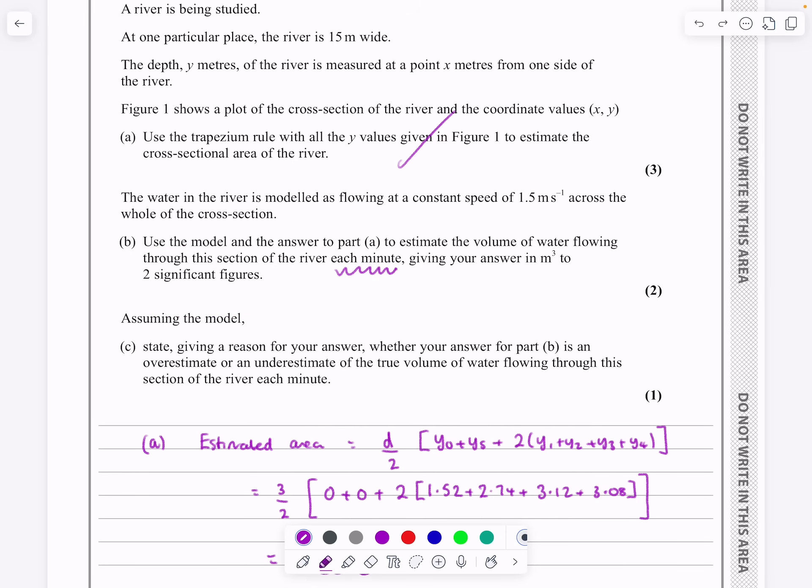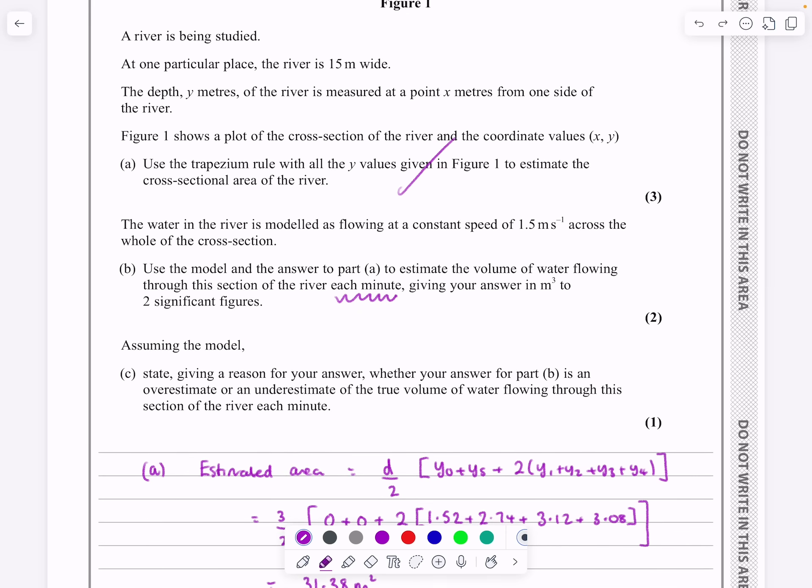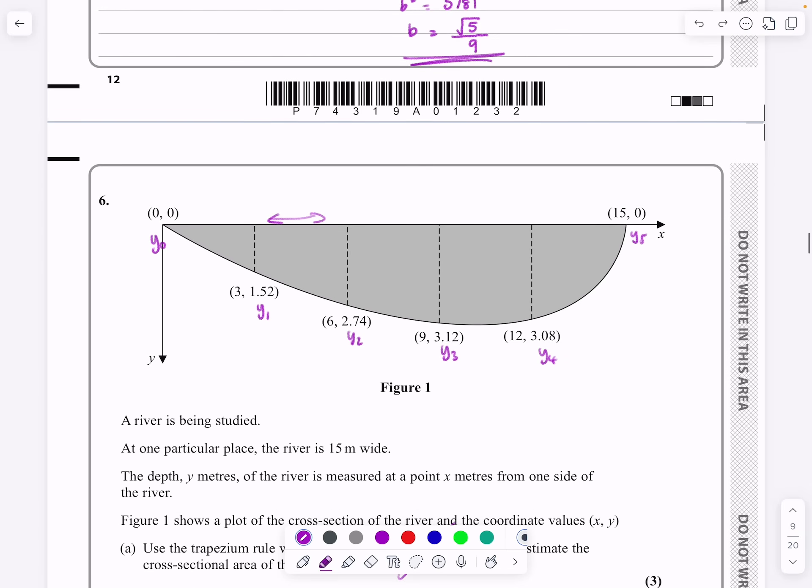And then finally, it says, assuming the model, states, giving a reason for your answer, whether the answer, our estimate, is an overestimate or an underestimate for the volume of water flowing through that.